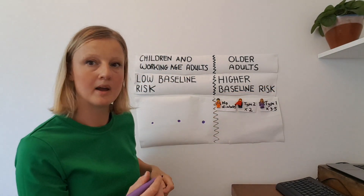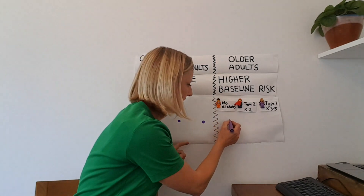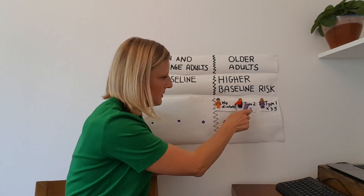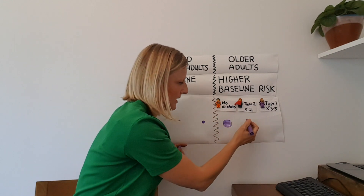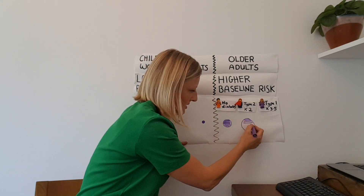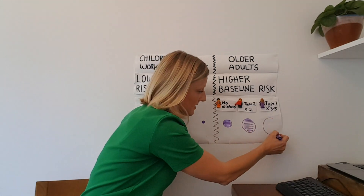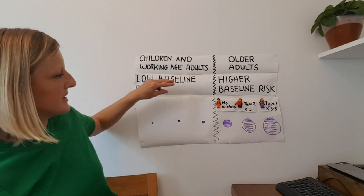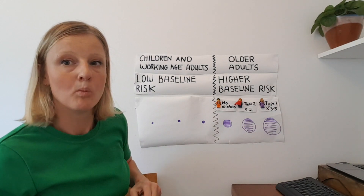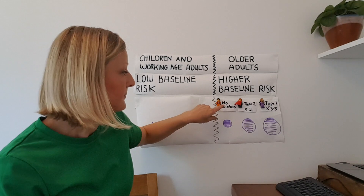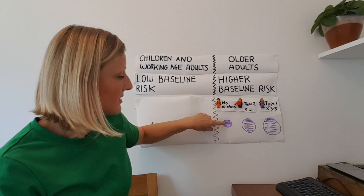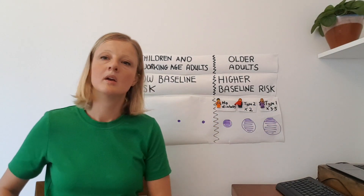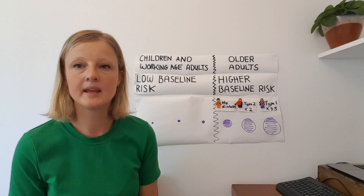Now let's imagine our group in their 80s. We know that older adults have a higher baseline risk of dying from the virus because of their age, shown with bigger baseline dots. The person with type 2 diabetes has twice the risk of someone without diabetes — twice that dot, like this. And the person with type 1 has three and a half times the risk. What this is showing us is that baseline risk is really important for understanding what these figures mean. Someone without diabetes already has a higher baseline risk to begin with, and if you've got diabetes, this significantly adds to that risk.